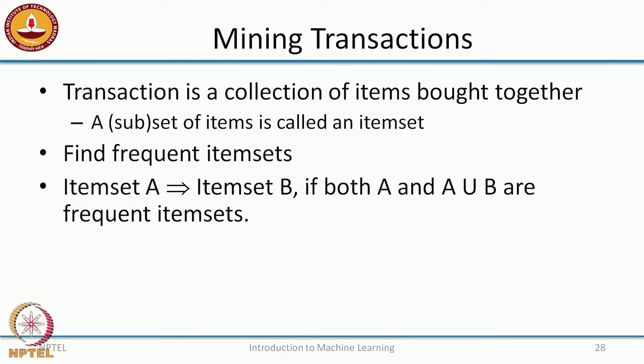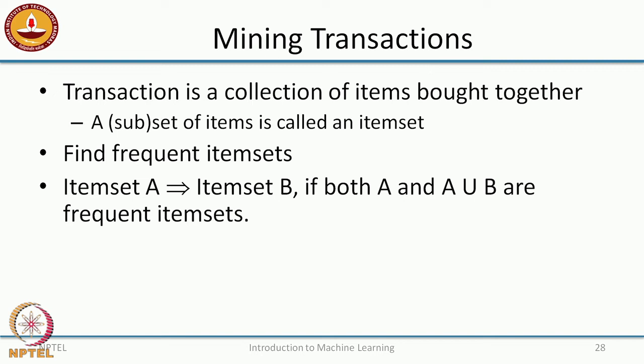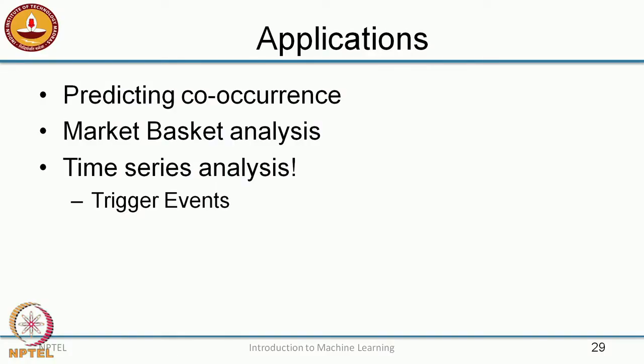The most popular application here is mining transactions, where a transaction is a collection of items brought together. A set or subset of items is called an itemset in the association rule mining community. The first step is to find frequent itemsets: if A is a frequent itemset and A union B is also a frequent itemset, then you can say that itemset A implies itemset B. Applications include predicting co-occurrence of events, market basket analysis, time series analysis for trigger events or fault causes, and more.